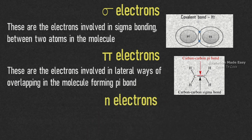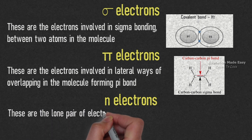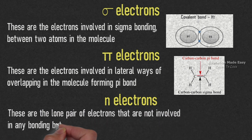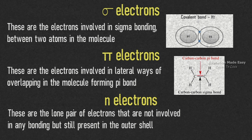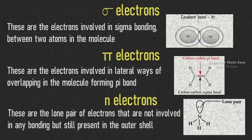N electrons are the lone pair of electrons that are not involved in any bonding but still present in the outer shell. For example, the lone pair of electrons in NH3 molecule.